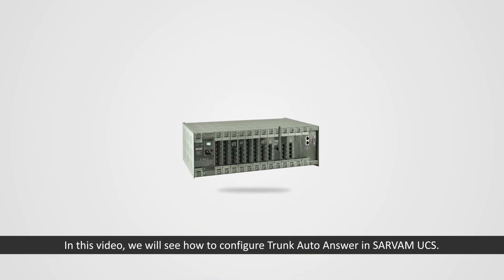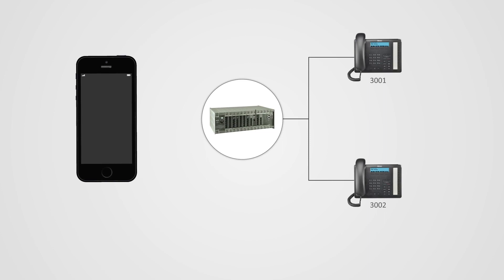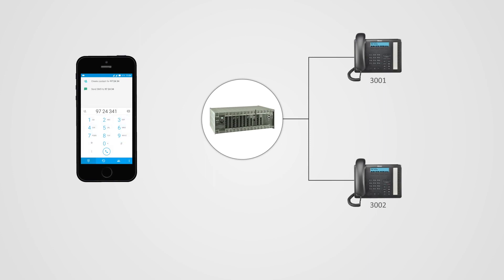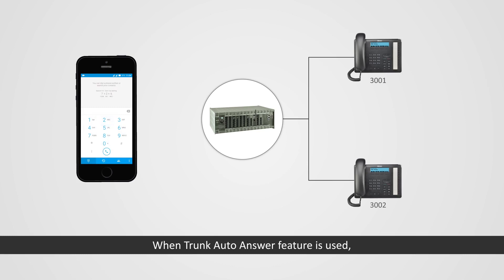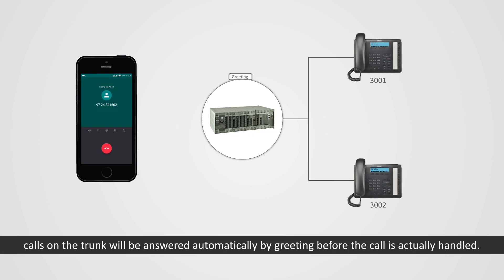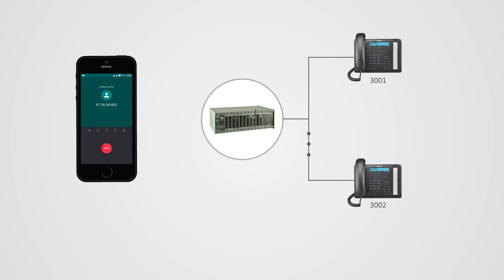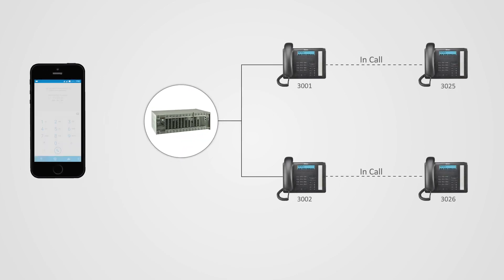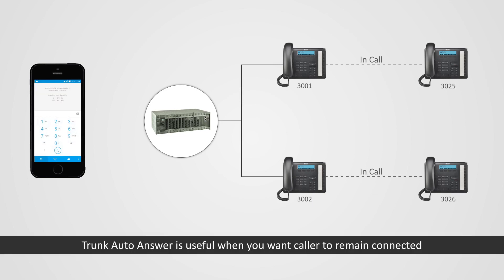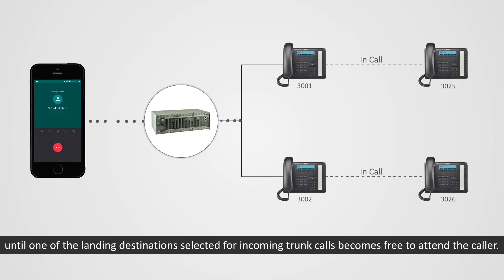Hi friends, in this video we will see how to configure trunk auto answer in Servom UCS. When trunk auto answer feature is used, calls on trunk will be answered automatically by a greeting before the call is actually handled. Trunk auto answer is useful when you want the caller to remain connected until one of the landing destinations selected for incoming trunk calls becomes free to attend the caller.